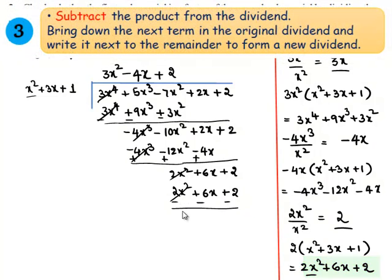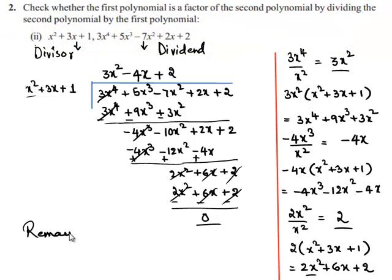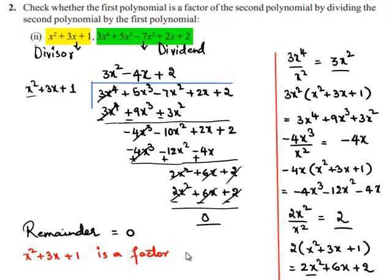On subtracting, 2x squared and minus 2x squared will be cancelled, 6x and minus 6x will be cancelled, and 2 and minus 2 will be cancelled. So this becomes 0. Now we can say that the remainder is 0. If the remainder is 0 when the second polynomial is divided by the first polynomial, we can say that the first polynomial, which is x squared plus 3x plus 1, is a factor of the second polynomial, which is 3x to the power 4 plus 5x cubed minus 7x squared plus 2x plus 2.